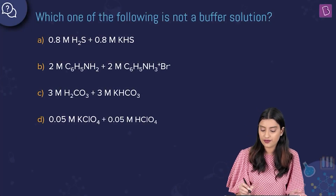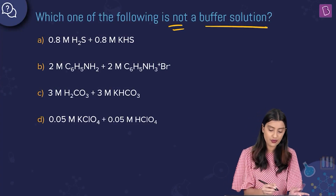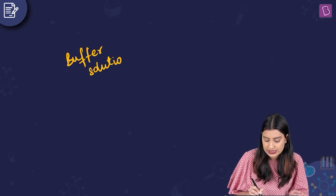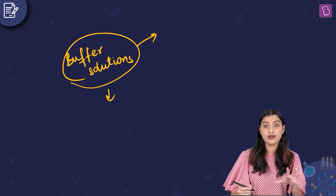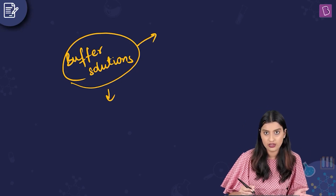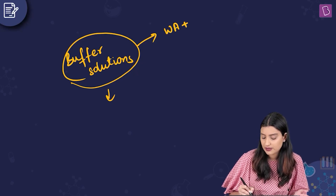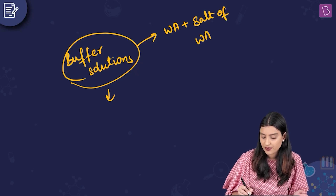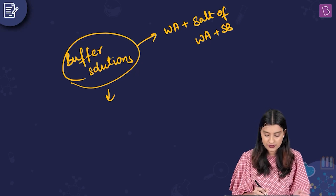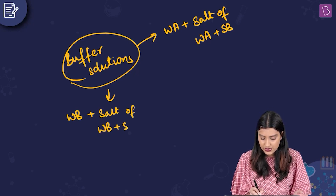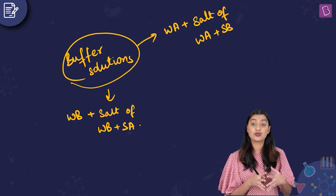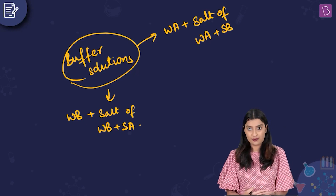Which of the following is not a buffer solution? Buffer solutions resist pH change considerably. There are two kinds: acidic buffers (weak acid + salt of that weak acid with a strong base) and basic buffers (weak base + salt of that weak base with a strong acid). If neither condition is met, it is not a buffer.